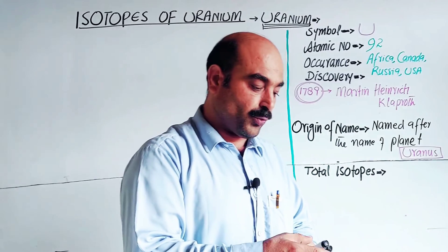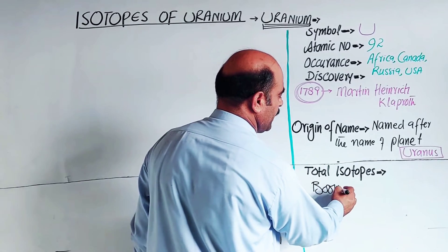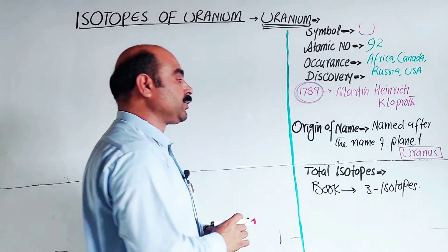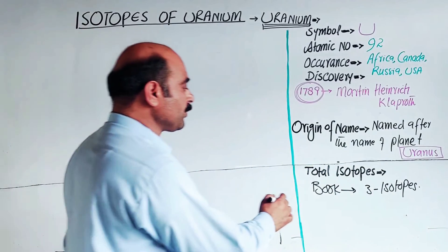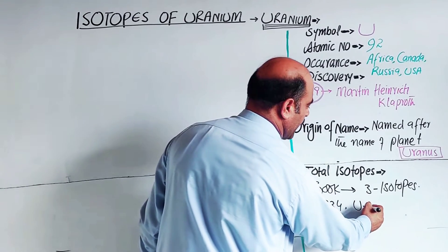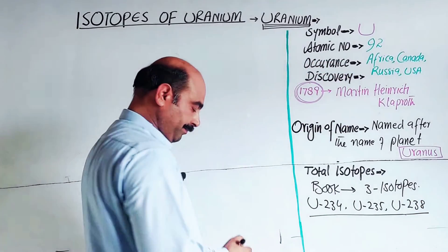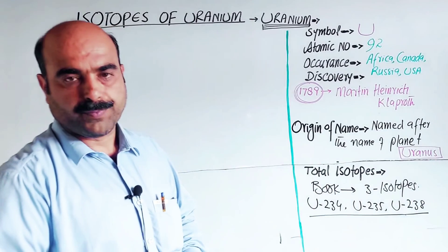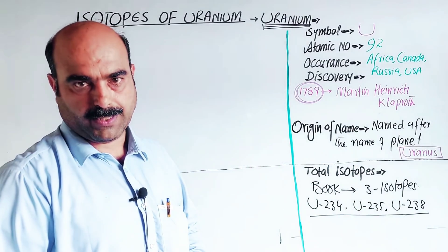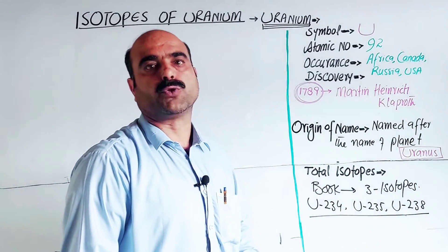According to your book and syllabus, there are three main isotopes of uranium: uranium-234, uranium-235, and uranium-238. Other isotopes include uranium-232, uranium-233, uranium-236, uranium-237, uranium-239, and so on. However, the three with natural abundance are the main ones covered in your book.